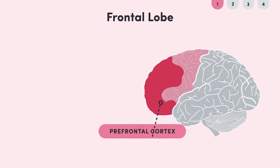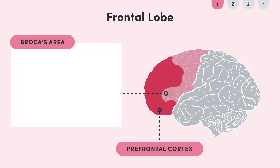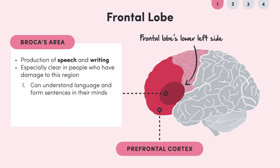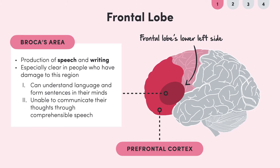Broca's area is found at the frontal lobe's lower left side. The main function of Broca's area is the production of speech as well as writing. The role of Broca's area becomes especially clear in people who have damage to this region. Although they can understand language and form sentences in their minds, they are unable to communicate their thoughts through comprehensible speech.